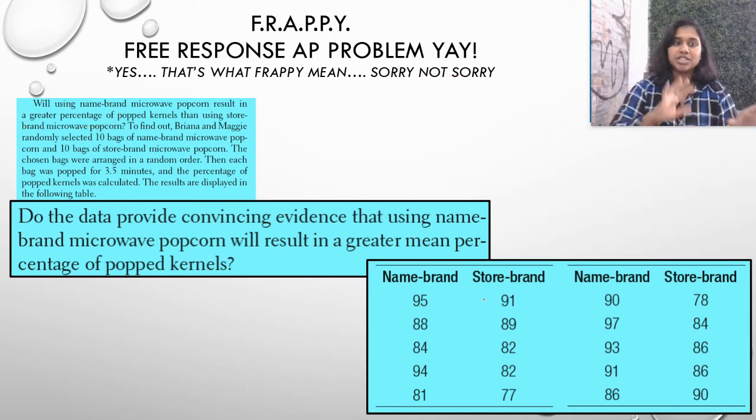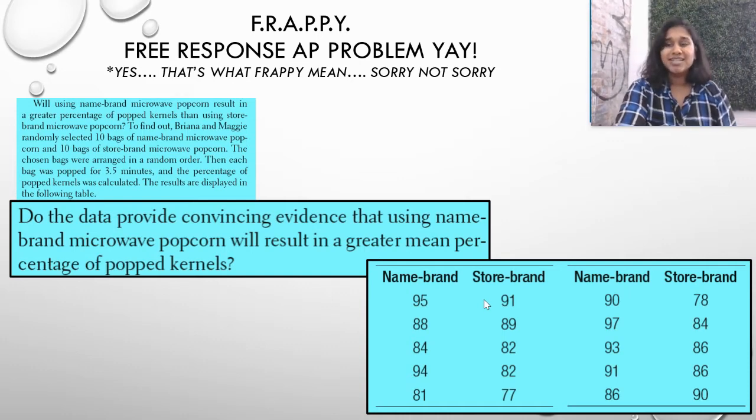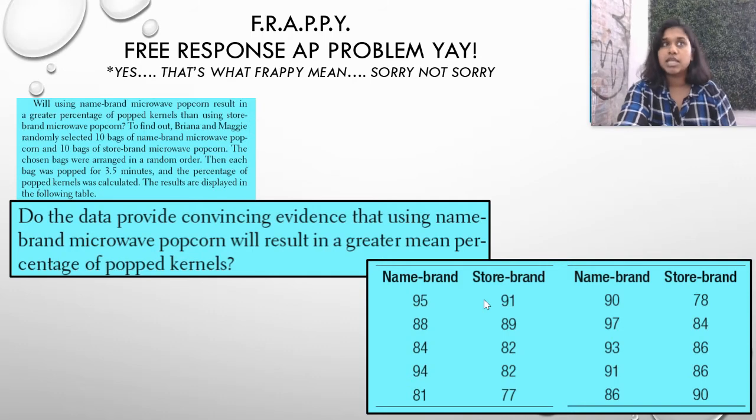And so because we're thinking about name brand being higher, we need this set right here. We need name brand minus store brand. And if the name brand really does have a significantly higher percentage of popped kernels, then we'll end up with values greater than zero. And that's what we're going to test first. So jumping into those solutions, there's my setup, jumping into those solutions.